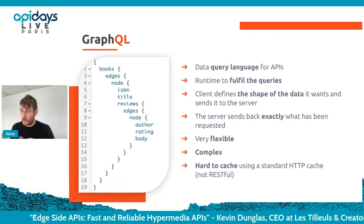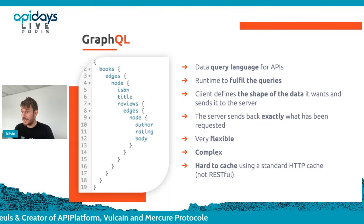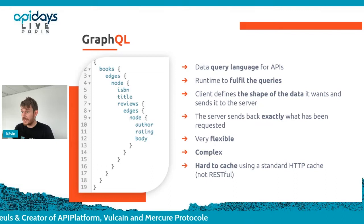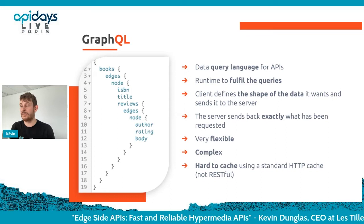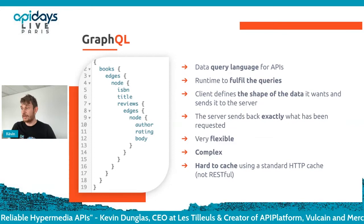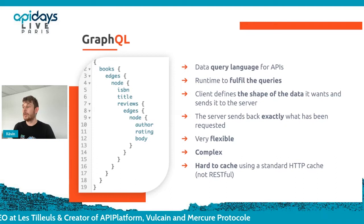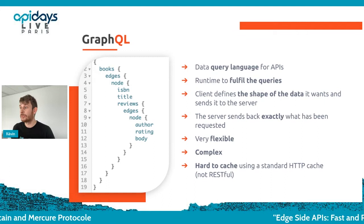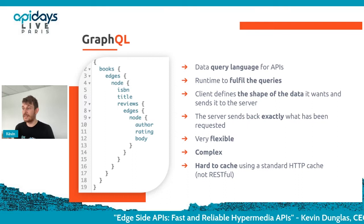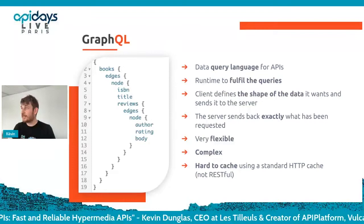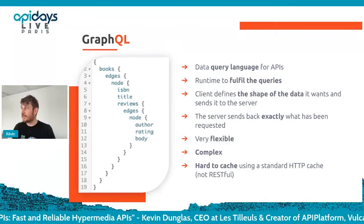We also have GraphQL — a modern alternative to REST designed to be flexible, letting the client hint what it will need and retrieve in a single query everything needed for display. This is not following the REST architecture; it uses HTTP as a black box. It's an open format under the umbrella of the Linux Foundation which is becoming more and more popular, but be aware that GraphQL is using HTTP as a black box.